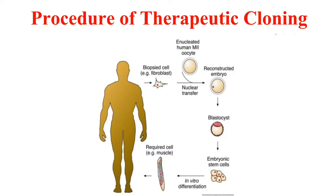Instead of implanting this embryo into the uterus of a surrogate mother, we just extract the stem cells from the blastocyst and allow them to grow into the cells we want for therapeutic purposes. This is about therapeutic cloning.